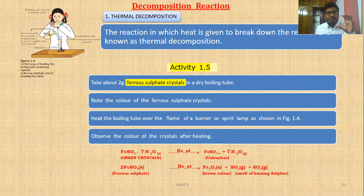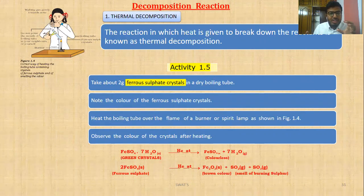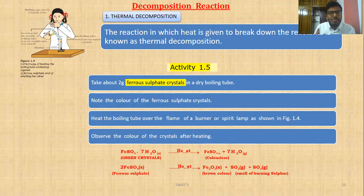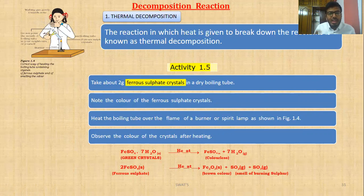So remember: first there was ferrous sulfate crystal — it was green in color. When you heat it, it converts to ferrous sulfate and water evaporates. Ferrous sulfate is basically colorless. Then when ferrous sulfate is heated again, it changes into ferric oxide, which is brown in color. We are also getting sulfur dioxide and sulfur trioxide, which have a pungent smell. So the characteristics change — green color changes into brown color.